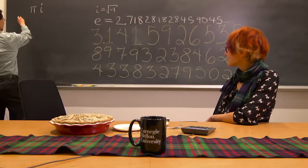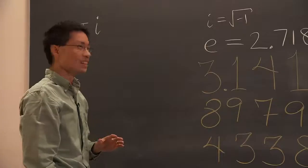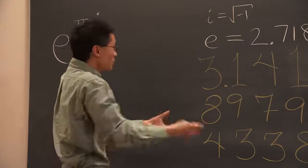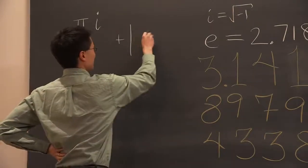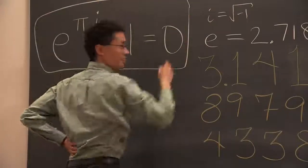It turns out that if you take E and raise it to πi, then I can finish the equation with two more numbers—the most basic numbers in math are 1 and 0. And this is true.